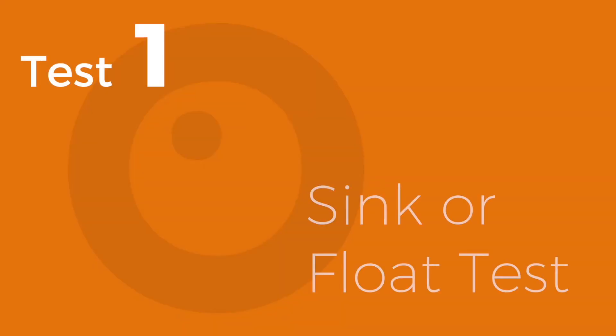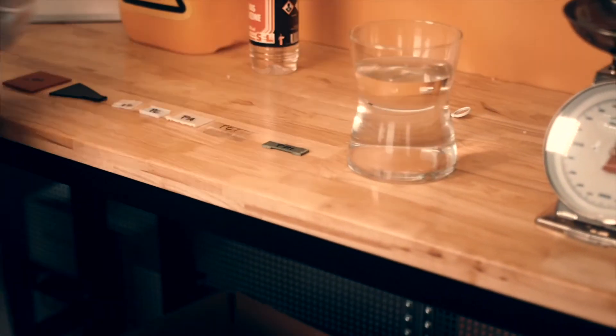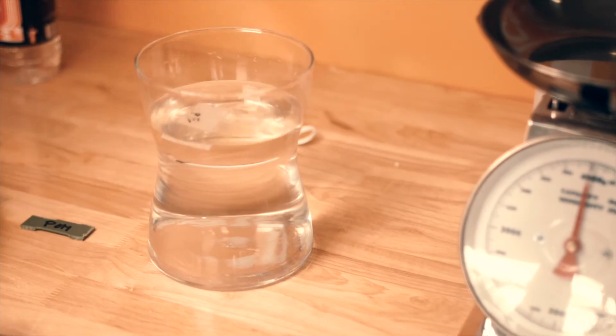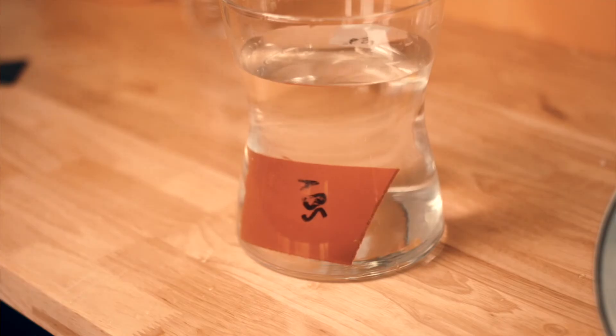Test 1, the sink or float test. This test helps you distinguish between two general groups of plastics. Low-density plastics tend to float such as PE and PP. All other plastics sink because of their higher density.